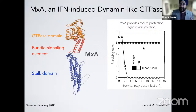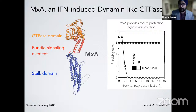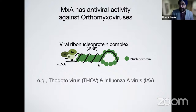MXA can single-handedly protect you long enough for the adaptive immune system to defend against otherwise lethal influenza infection. For thirty years we've tried to understand what makes MXA tick. MXA works by binding to the viral polymerase components — PB1, PB2, and PA — and to the nuclear protein that wraps around the viral RNA. The SARS-CoV-2 polymerase complex looks remarkably similar to influenza. MXA binds the nuclear protein and prevents the virus from undergoing RNA replication and transcription, thereby blocking viral infection.